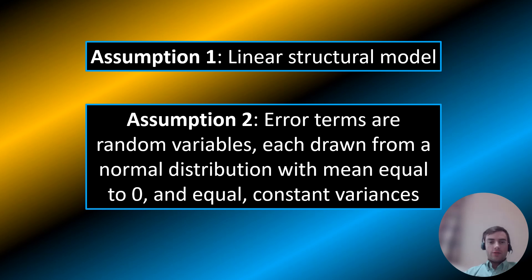For the first assumption, we're going to assume a linear structural model. For the second assumption, we're going to assume that the error terms are random variables each drawn from a normal distribution with mean equal to 0 and equal constant variances.